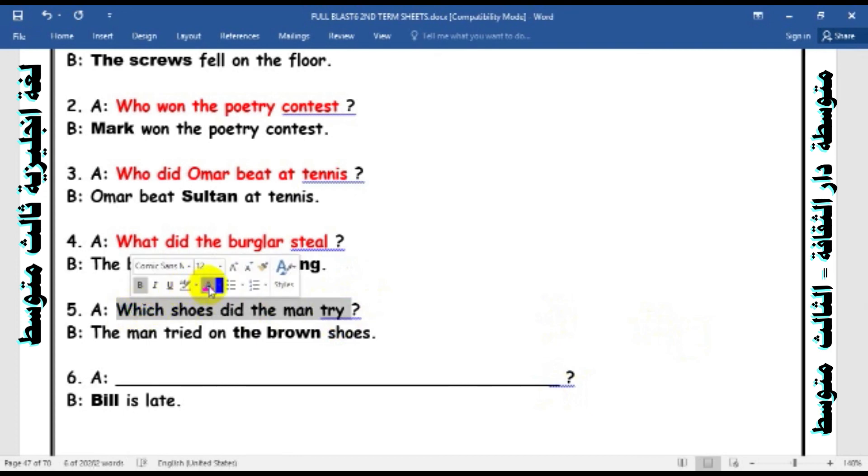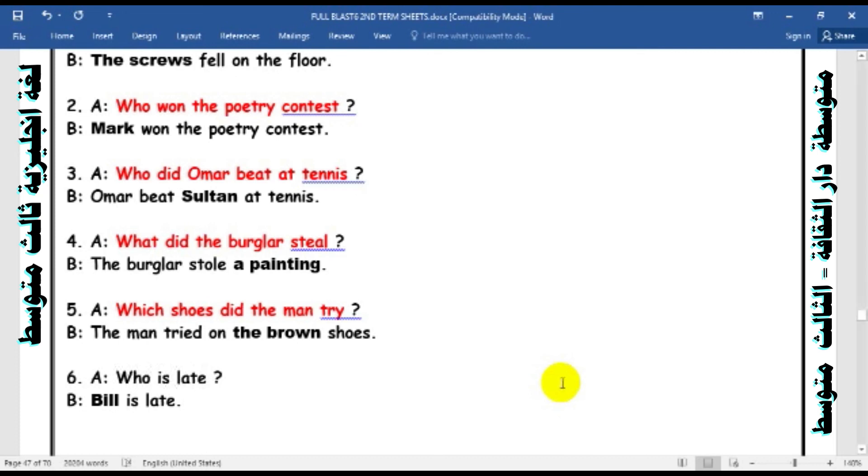Let's look at the last one. It's so easy. It's a subject question. We want to ask about the subject. Bill is late. It's so easy. Who can? Yes. Excellent. Who or what? Who. Bill. Who is late? The answer is Bill. Excellent. Super excellent.